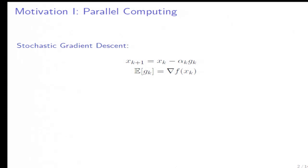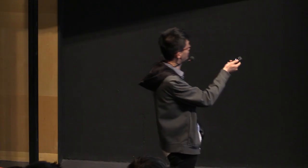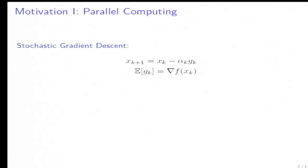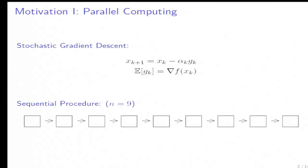All of us know stochastic gradient descent, which can be written in only one line: x_k plus 1 equals x_k minus alpha g_k, where g_k is an unbiased estimate of the true gradient. This is a fully sequential procedure, meaning that to compute later iterates, we have to compute all the previous iterates. This can be slow because it's fully sequential.